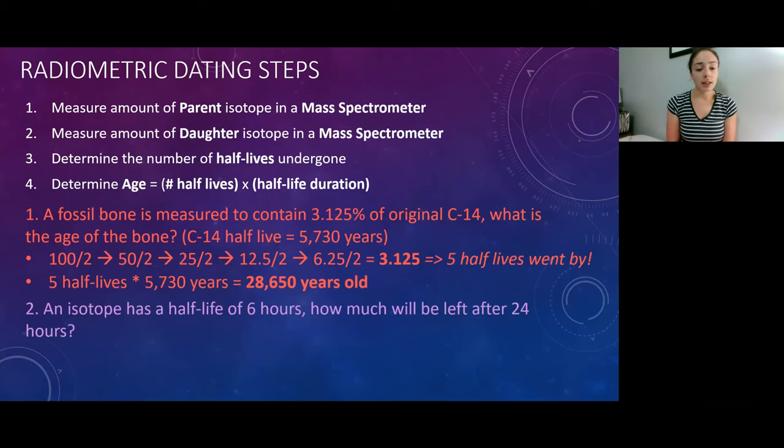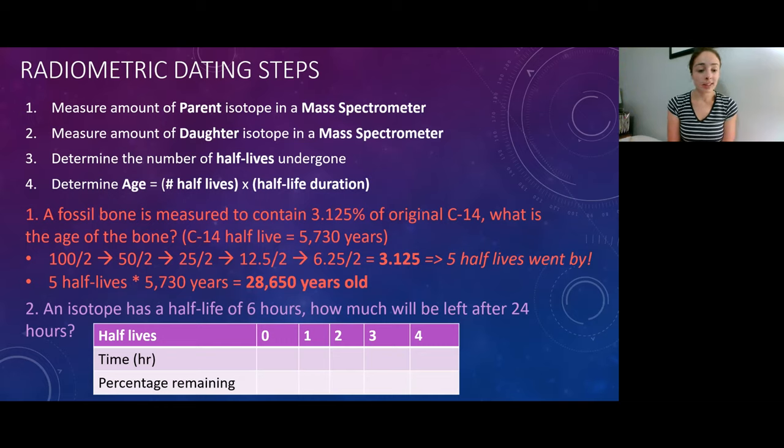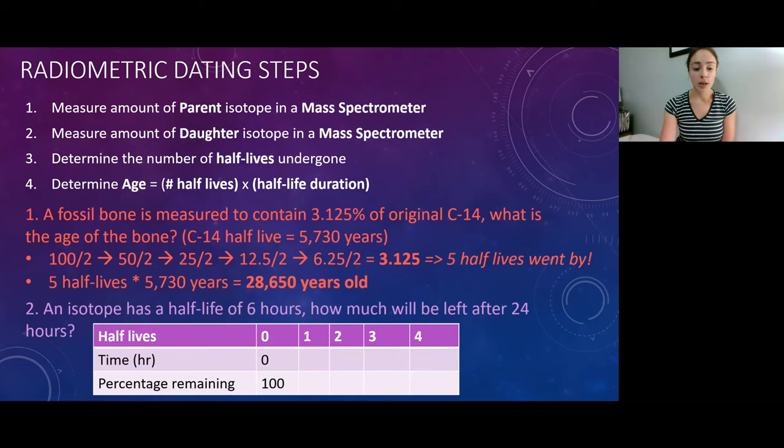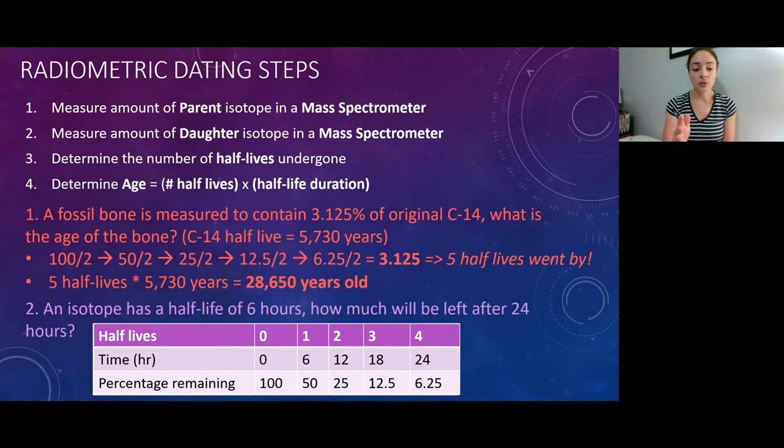The second exercise asks, an isotope has a half-life of 6 hours. How much will be left after 24 hours? So to do this, first I determined how many half-lives would go by after 24 hours. Basically, how many times can you put 6 hours into 24 hours? And that is 4. So I made a table of 4 half-lives with 2 rows. First row is time. Second row is percentage remaining. And this is the most clear and easy way to do this problem. So at time 0, 0 time has gone by, and 100% of the parent isotope is remaining. After the first half-life, 6 hours have gone by, and 50% of the parent isotope is remaining. After half-life 2, 12 hours have gone by, and 25% is remaining. After the third half-life, 18 hours have gone by, and 12.5% is remaining. And after the fourth half-life, you are at your end of your 24 hours, and 6.25% of your parent isotope is remaining.